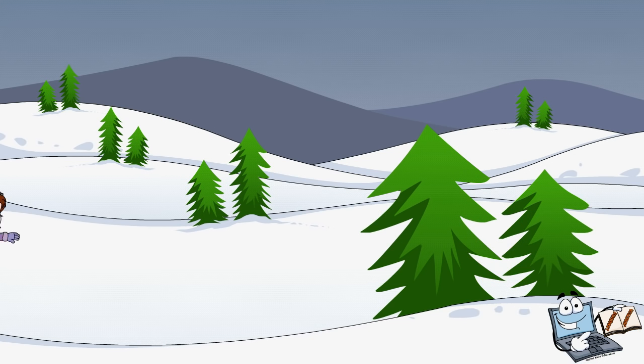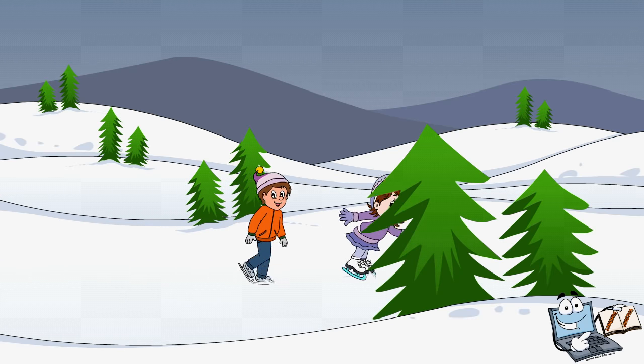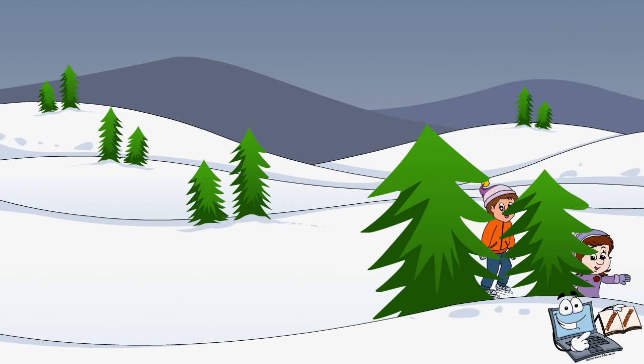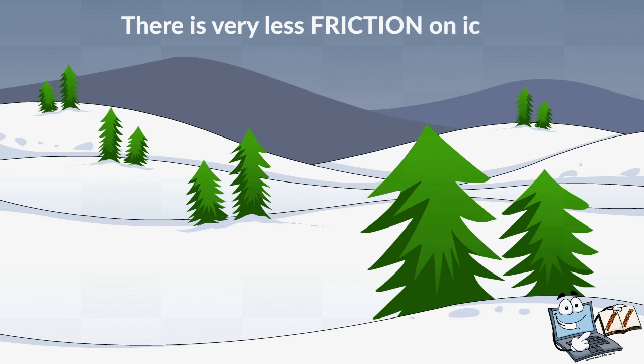Oh, and look over there. Some people are skating on ice. How are they able to glide so smoothly on the ice? It's because there's very little friction on ice.